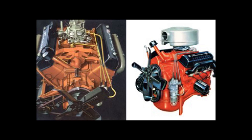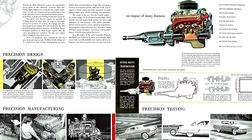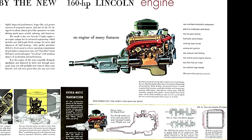The Lincoln Y-Block is considered a big block design because displacements could go from 279 cubic inches all the way to 368 cubic inches, whereas the Ford Y-Block could only go from 239 to 312. It's also important to note that parts do not interchange between the Ford Y-Block and the Lincoln Y-Block, except for the oil pump and distributor, which could be used in either family.